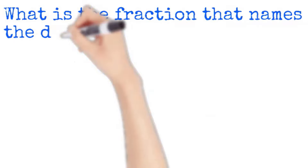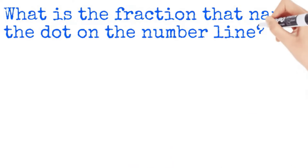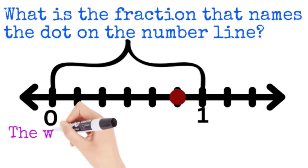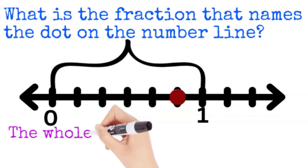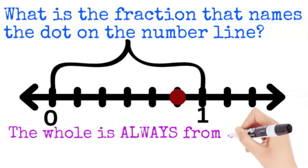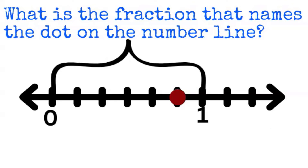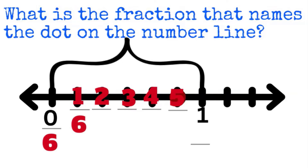Let's try this one: what is the fraction that names the dot on the number line? Remember the number line shows zero to one, and the whole is always from zero to one. We're going to break the whole into pieces to figure out our denominator. In this case, there are six equal pieces, so six is my denominator.